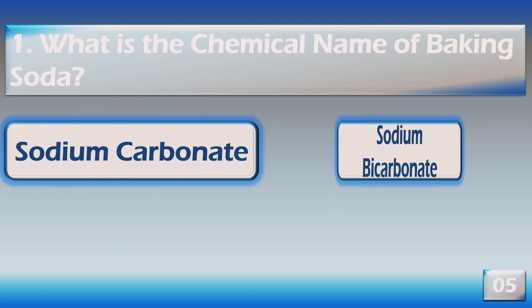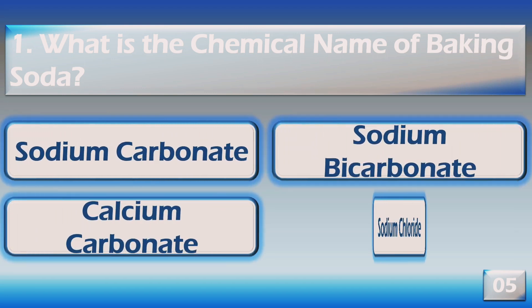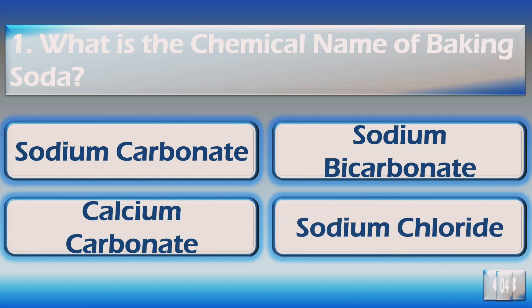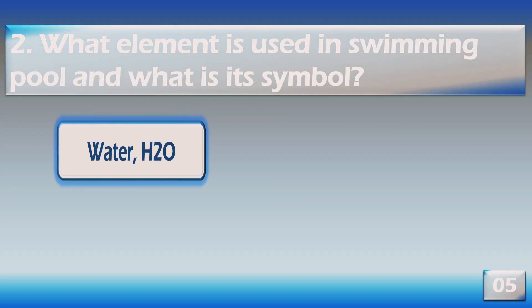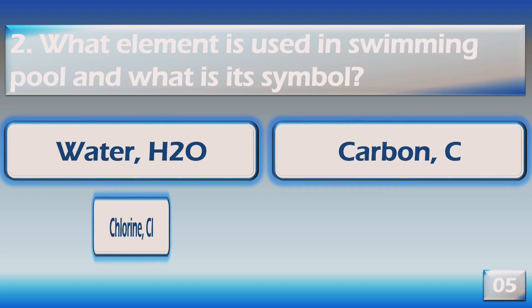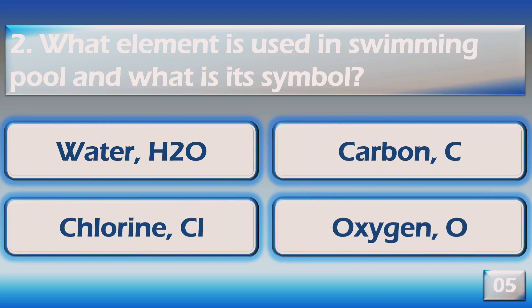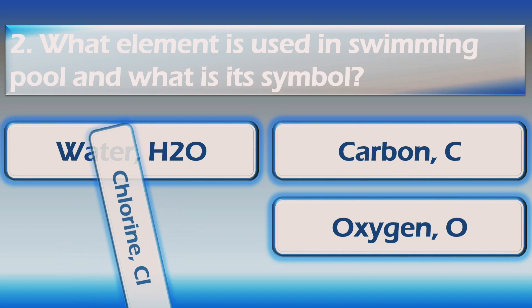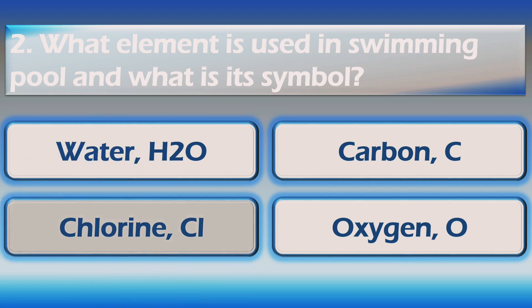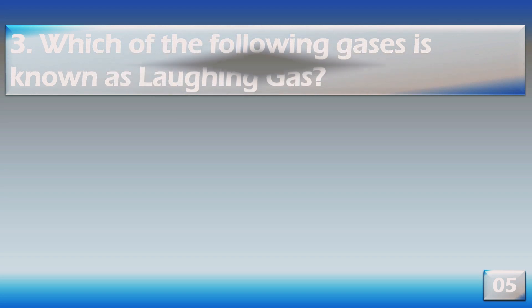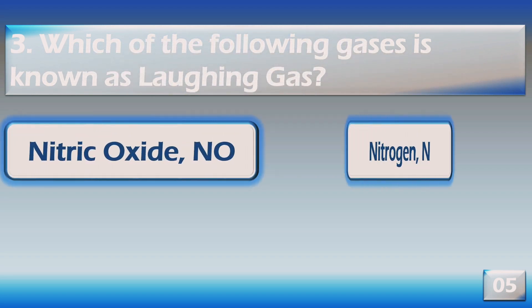Subscribe to our YouTube channel. What is the chemical name of baking soda? Sodium bicarbonate. What element is used in a swimming pool and what is its symbol? The right answer is chlorine, Cl.